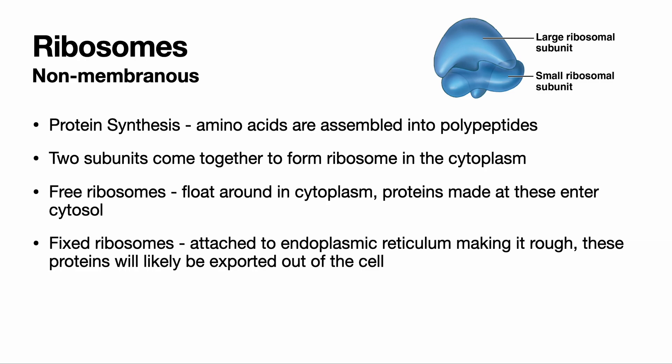Ribosomes are non-membranous organelles — they don't have a membrane around them. They are made up of protein and RNA, and their job is to synthesize proteins. Ribosomes hang out in the cytoplasm, and when an mRNA strand with directions to make a protein is available, they assemble amino acids in the correct order to form the protein. Sometimes ribosomes are attached to the endoplasmic reticulum — we call that the rough endoplasmic reticulum — and sometimes they are free in the cytoplasm.